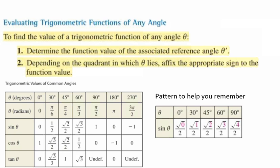To find the value of a trigonometric function of any angle theta, you first need to determine the function value of the associated reference angle theta prime. Then, depending on the quadrant it is in, you're going to affix the appropriate sign to the function, whether it's positive or negative.